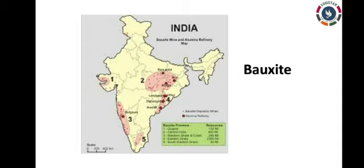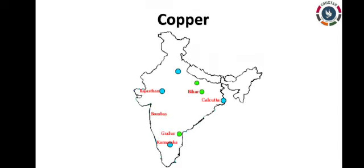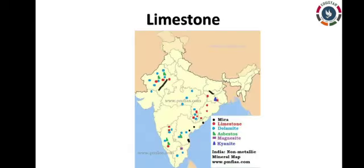India is the largest producer and exporter of mica in the world, produced in Jharkhand, Bihar, Andhra Pradesh, and Rajasthan. Copper is produced in Rajasthan, Madhya Pradesh, Jharkhand, Karnataka, and Andhra Pradesh. Manganese is found in Maharashtra, Madhya Pradesh, Chhattisgarh, Odisha, Karnataka, and Andhra Pradesh. Limestone producing states are Bihar, Jharkhand, Odisha, Madhya Pradesh, Chhattisgarh, Rajasthan, Gujarat, and Tamil Nadu.